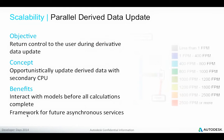Another area is parallel derived data update. We want to make use of secondary CPUs and multi-threading. The objective is to return control to the user immediately while derivative data is being calculated in the background, so the user can interact with the model before certain calculations complete. This system is implemented as a framework currently used for color fills, with plans to use it for future asynchronous services.